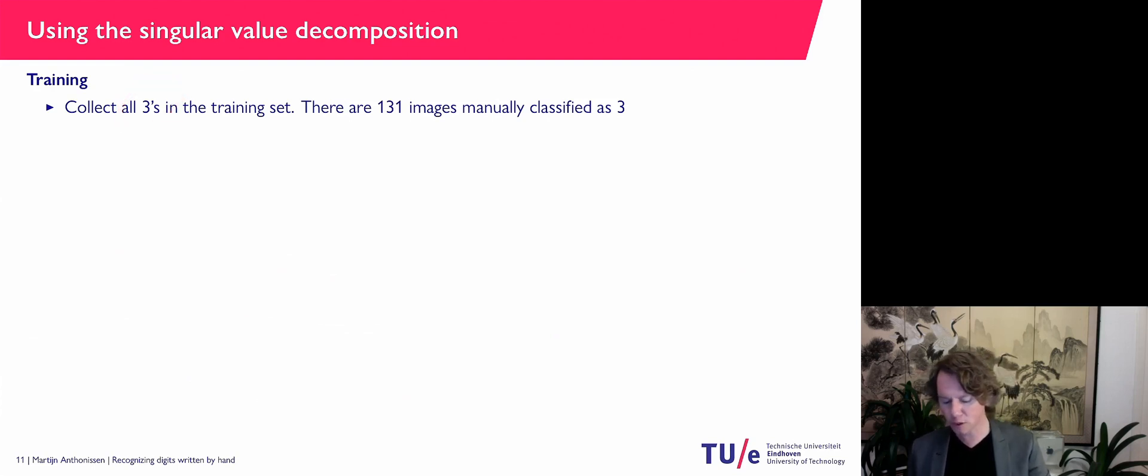Now, if I look at the 3's in my training set, apparently there was 131 images. So I have 131 vectors, all size 256, and each of them represents a 3. Now, next what I'm going to do is build a matrix with these images.